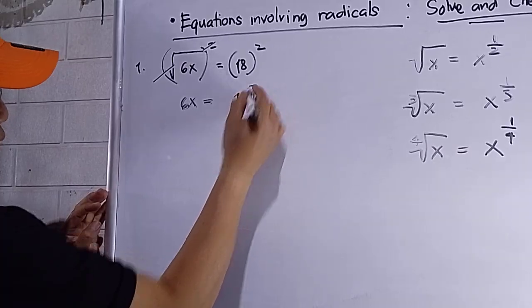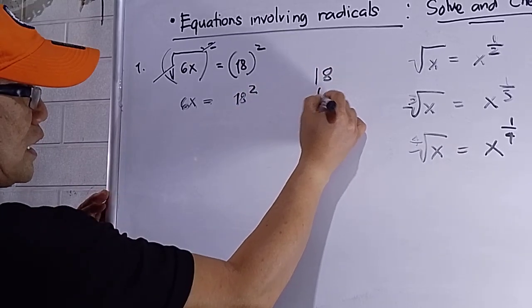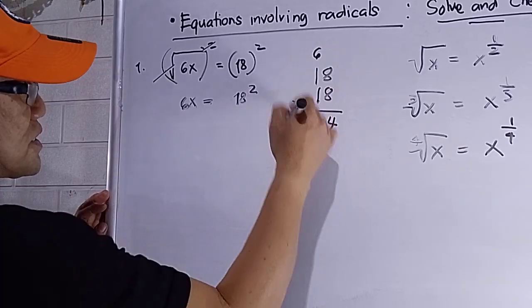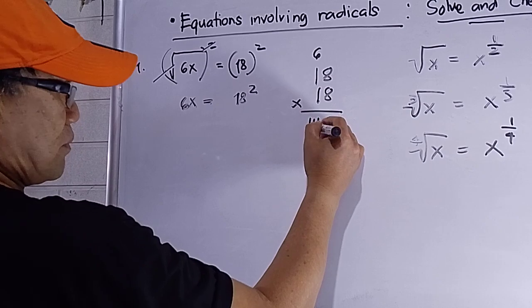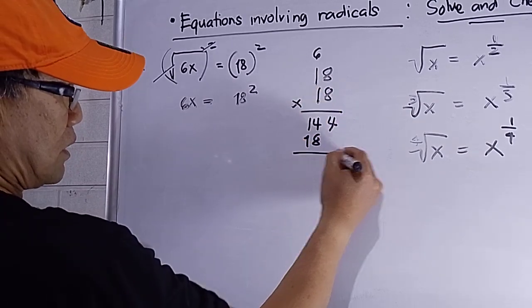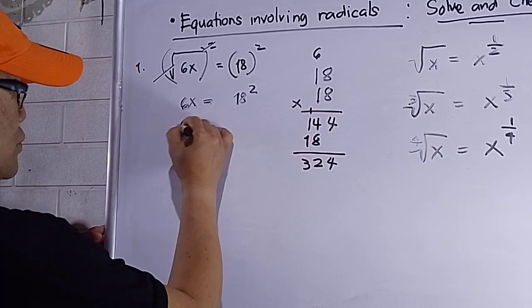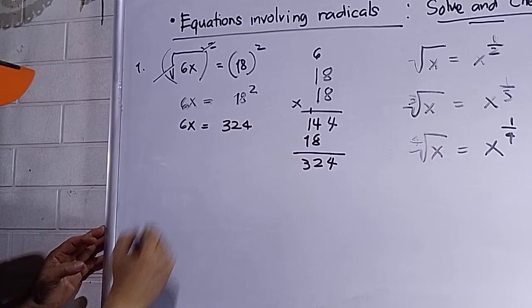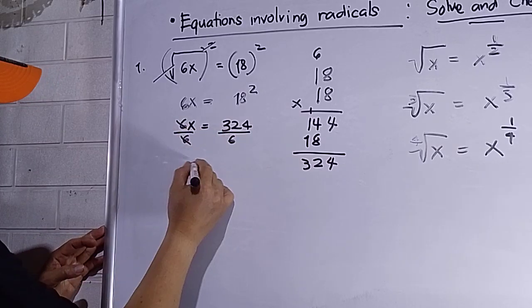After squaring both sides, I have 6x equals 18 squared. 18 times 18 is 324. So 6x equals 324. To solve for x, I need to divide both sides by 6.